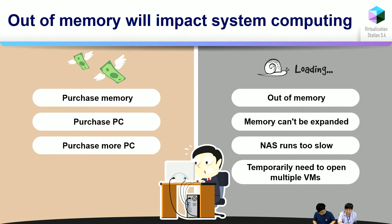The issues are: first, out of memory; second, memory cannot be expanded; third, the NAS runs too slow; and finally, the temporary need to open multiple VMs. But the final solution always comes down to money, because you need to purchase more memory, purchase a PC, or purchase more memory and more PCs. But we always have one problem — I have no budget.